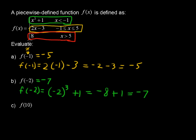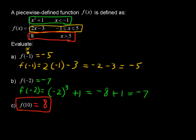This sometimes trips people up, but don't worry about it. We're saying that no matter what the x value is, as long as it's greater than 5 — whether it's 5.1 or a million — that function equals 8. That's just how this piece is defined. So f(10) equals 8, and in fact, anytime x is greater than 5, our function equals 8. That's how we evaluate a piecewise defined function.